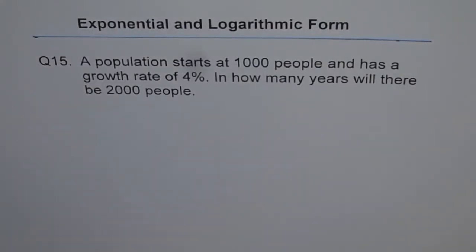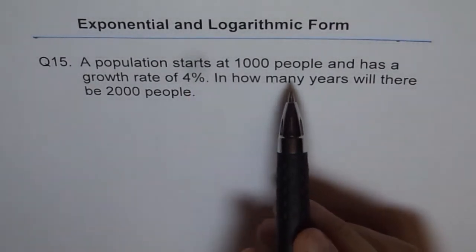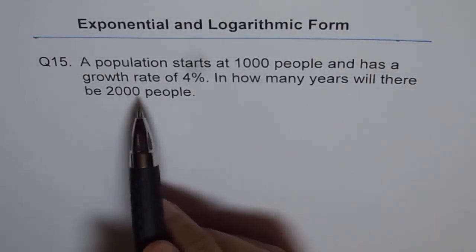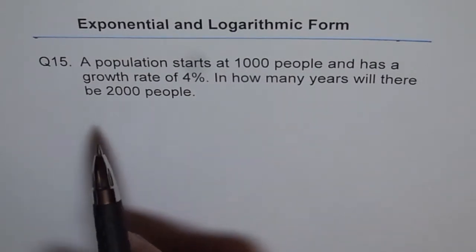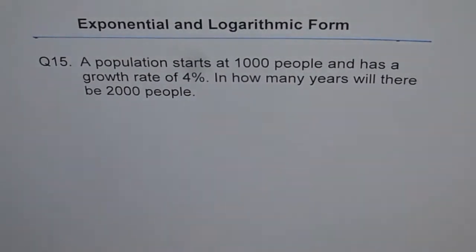Exponential and logarithmic form. Question 15. A population starts at 1000 people and has a growth rate of 4%. In how many years will there be 2000 people?